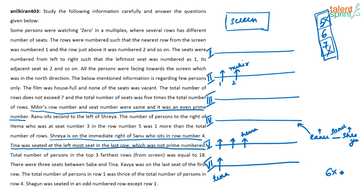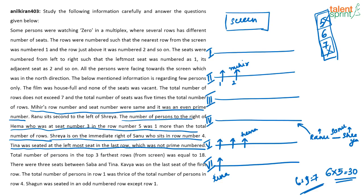With 6 rows, total seats = 6 × 5 = 30. People to the right of Hema = 6 + 1 = 7. Since Hema is in seat 3, there are 7 people to her right, meaning row 5 has seats 1 through 10 — that's 10 people in row 5. Each row has a different number of seats, so no other row has 10 people.